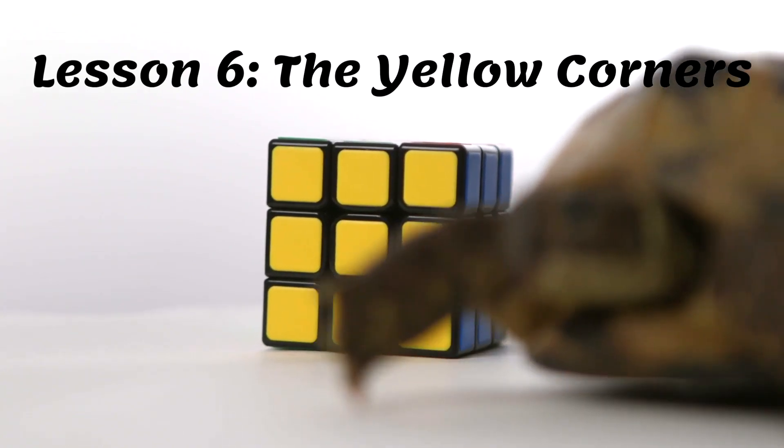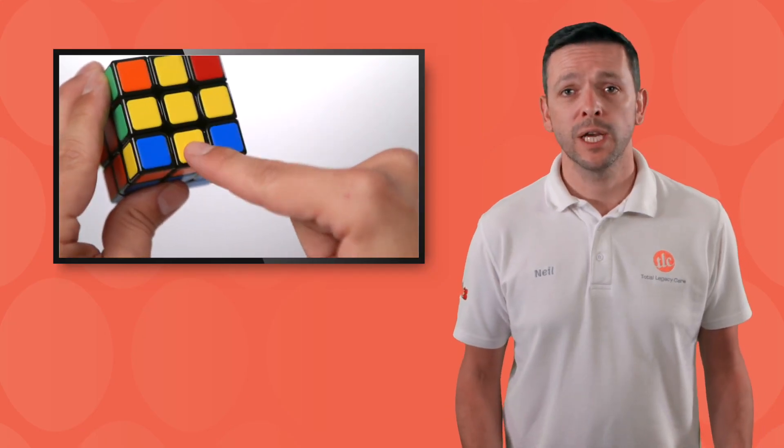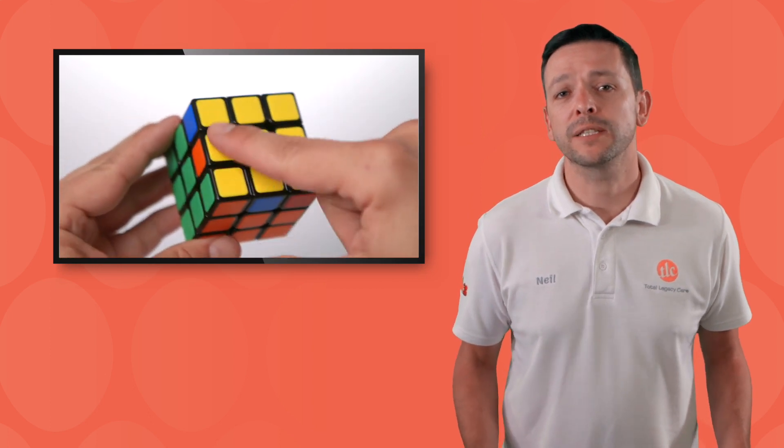Lesson six, the yellow corners. Our cube should look like this now. We have a yellow cross.